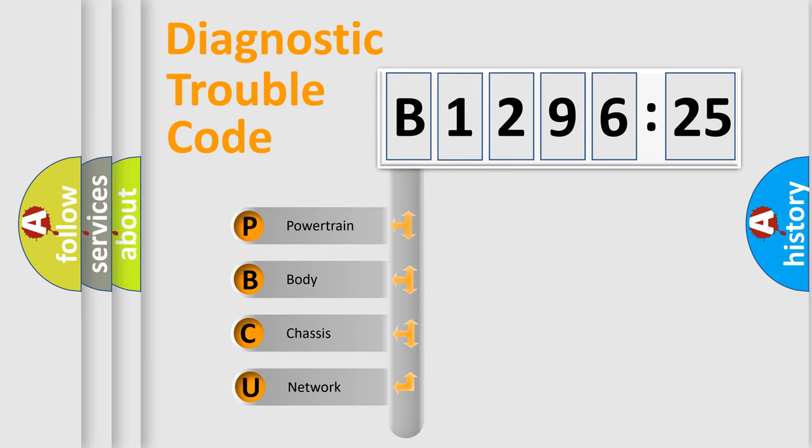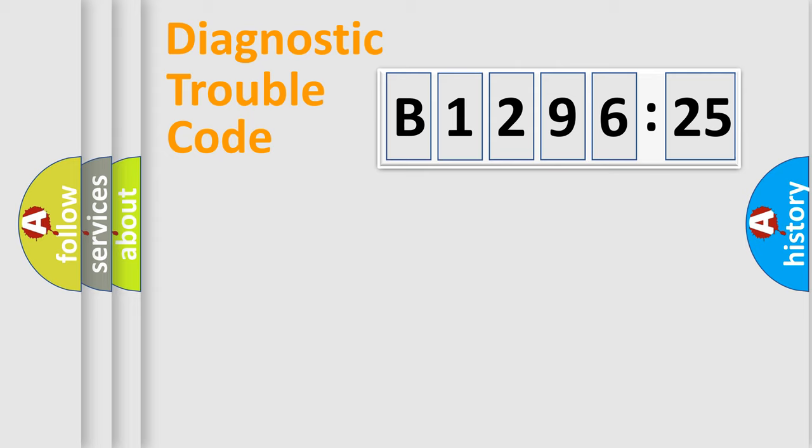First, let's look at the history of diagnostic fault code composition according to the OBD2 protocol, which is unified for all automakers since 2000. We divide the electric system of automobiles into four basic units.